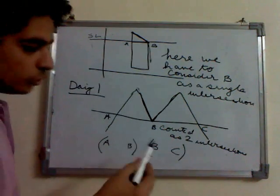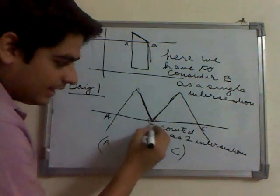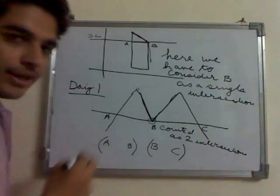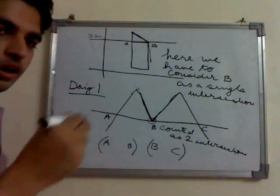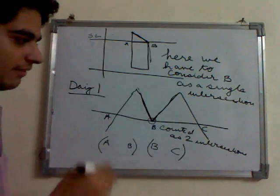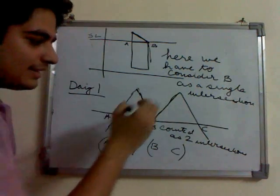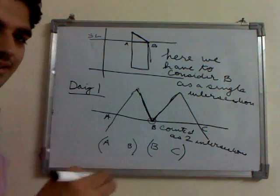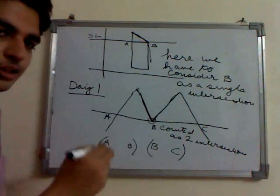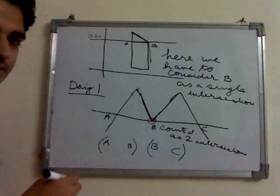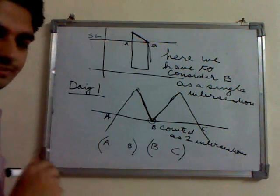We can also say that if the intersecting point is the local maxima or the local minimum, and we consider the end points of the edges, then we can consider that vertex as two points. Otherwise, we can consider it as one point.